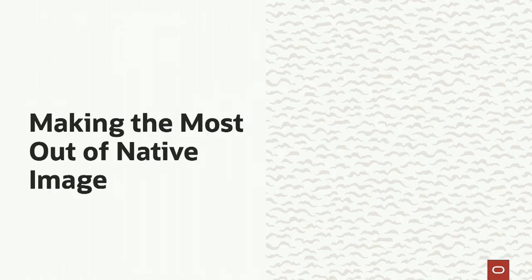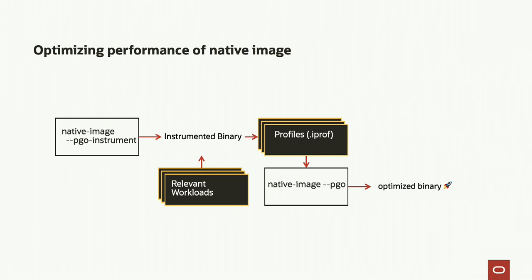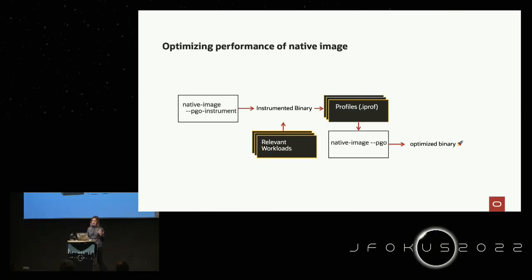There are a few more things you can do with native image. What about peak performance? Native image is compiled ahead of time, so what do we do about peak performance? On the JVM, dynamic code execution and profiling feedback allow the JVM to improve peak performance. It is more challenging when compiling ahead of time since you don't have profiling feedback yet, but there is a way to tackle it — it's called Profile-Guided Optimizations.